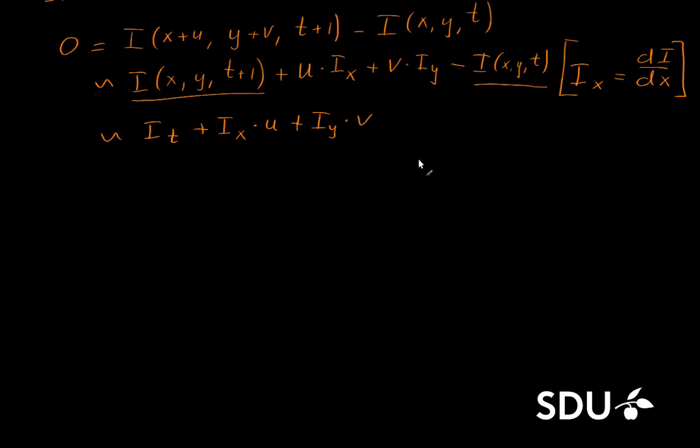And this expression can actually be written in a bit simpler way, where we still have the time-wise derivative of the intensity of a certain pixel, plus, and then we have the gradient of the image at the position. And the gradient is just a vector containing the spatial derivatives of the intensity function. And then we multiply that with a vector containing both the u and v values, like this. And this should still be equal to 0 as what we started with.